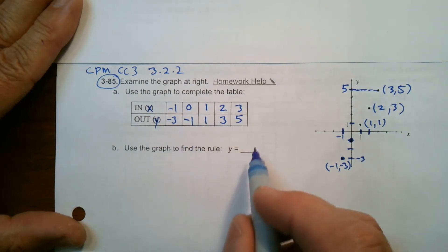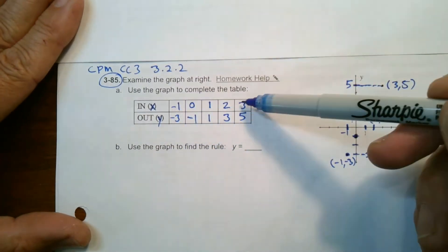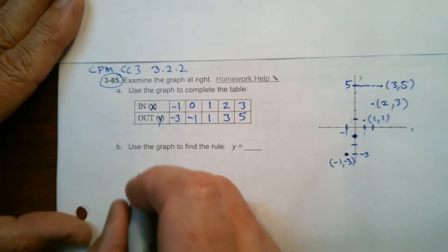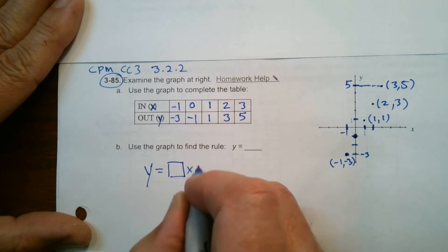Now I've got to write the rule. And once again, finding the rule is what am I doing to these values to get these values? The nice thing at this point, we know that every rule is something where Y is equal to, you do something to X and then you might add something or subtract something.